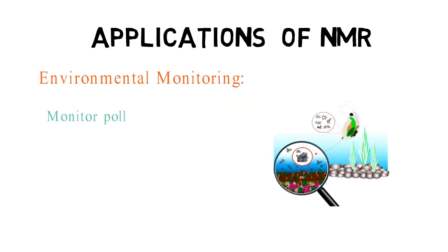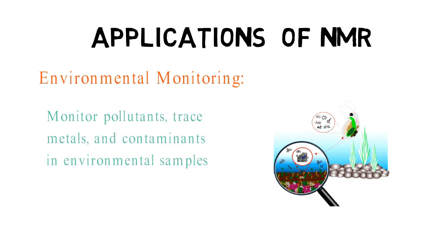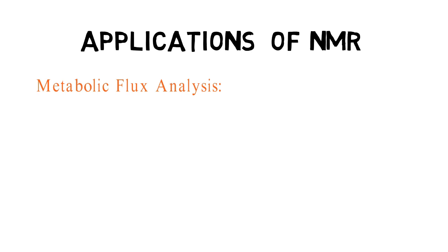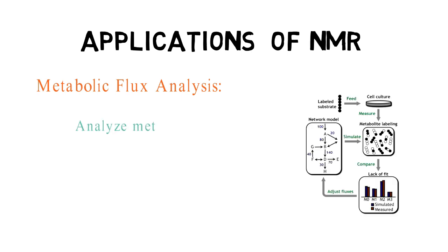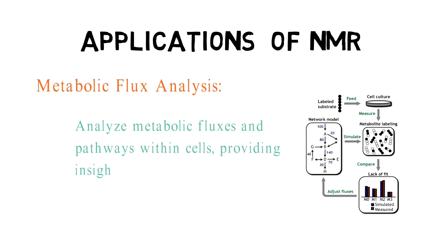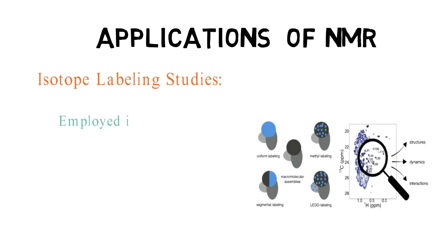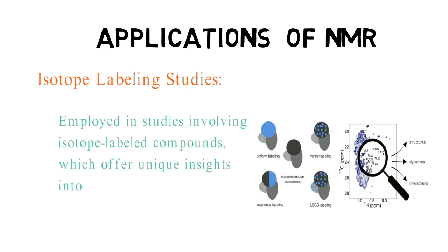NMR is utilized to monitor pollutants, trace metals, and contaminants in environmental samples, contributing to environmental assessment and remediation efforts. It is used to analyze metabolic fluxes and pathways within cells, providing insights into cellular metabolism and its regulation. It is also employed in studies involving isotope-labeled compounds, which offer unique insights into molecular interactions and dynamics.